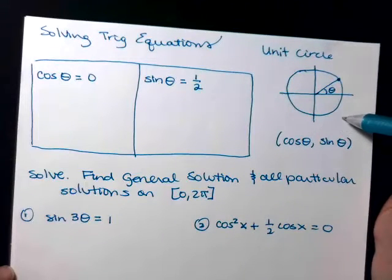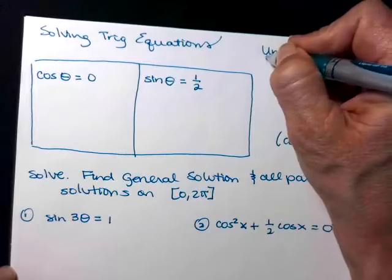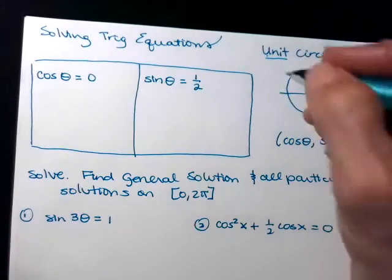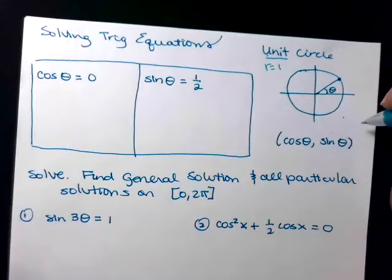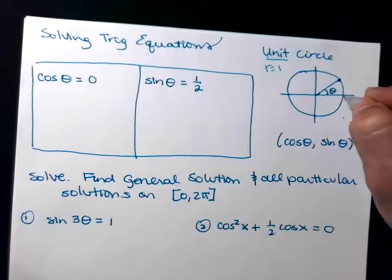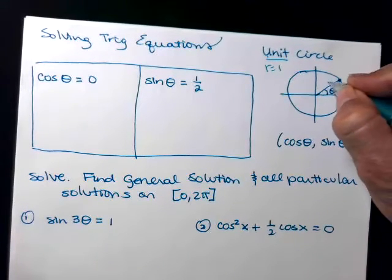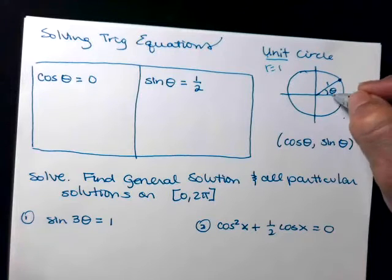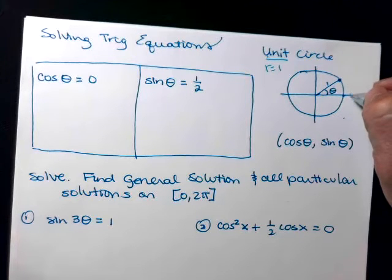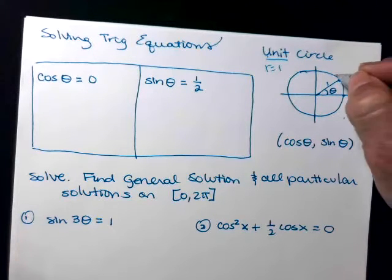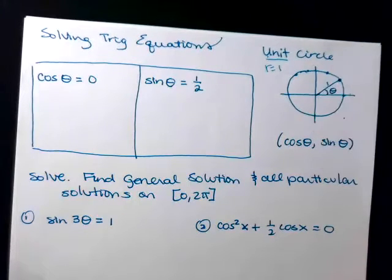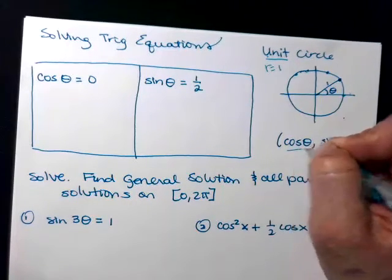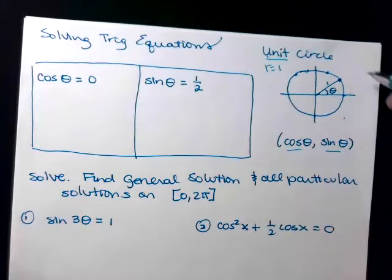We're going to start over here with the unit circle. When I say unit, that means radius 1. So the radius is 1. Theta is the rotation from the positive x-axis. And the ordered pairs along the outside of this circle are the cosine of theta and the sine of theta.